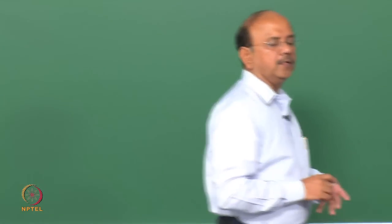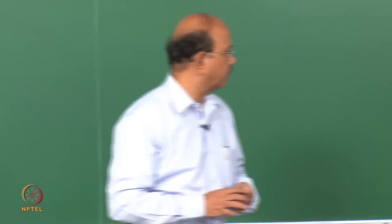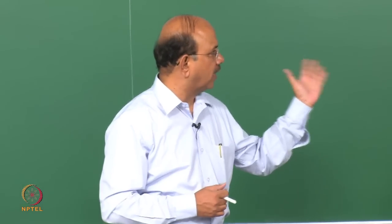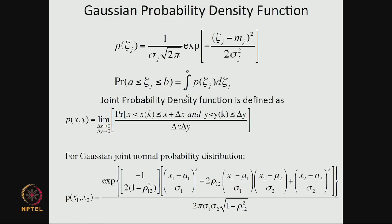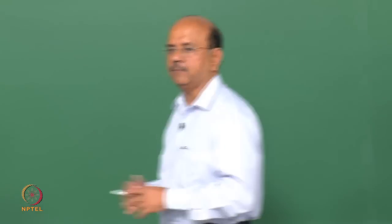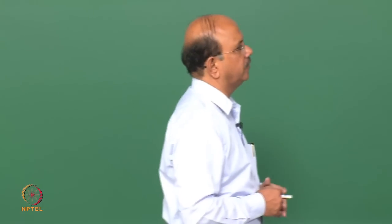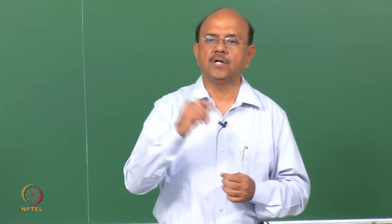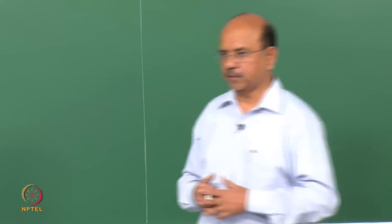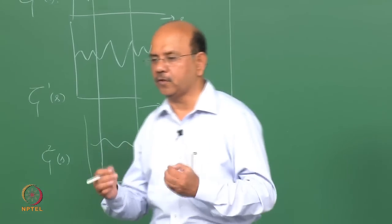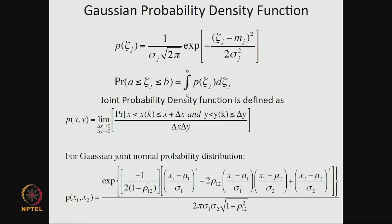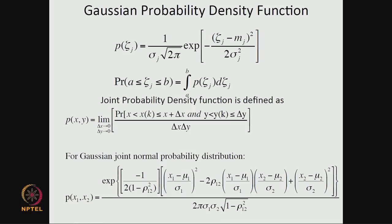We are also interested in joint probability of two variables x1, x2. The joint probability is given by a Gaussian joint normal distribution function. Joint probability between two variables x and y is: the probability that x lies between x and x plus delta x, and y lies in a range. The joint probability density p(x,y) can be written as the second derivative, where rho is the correlation coefficient.